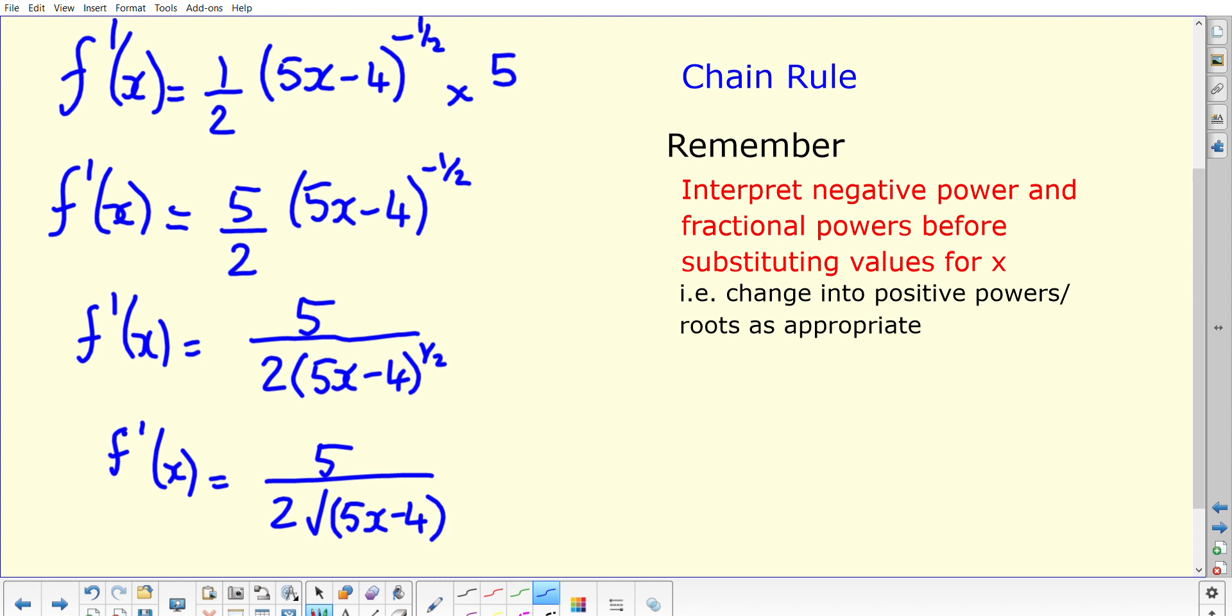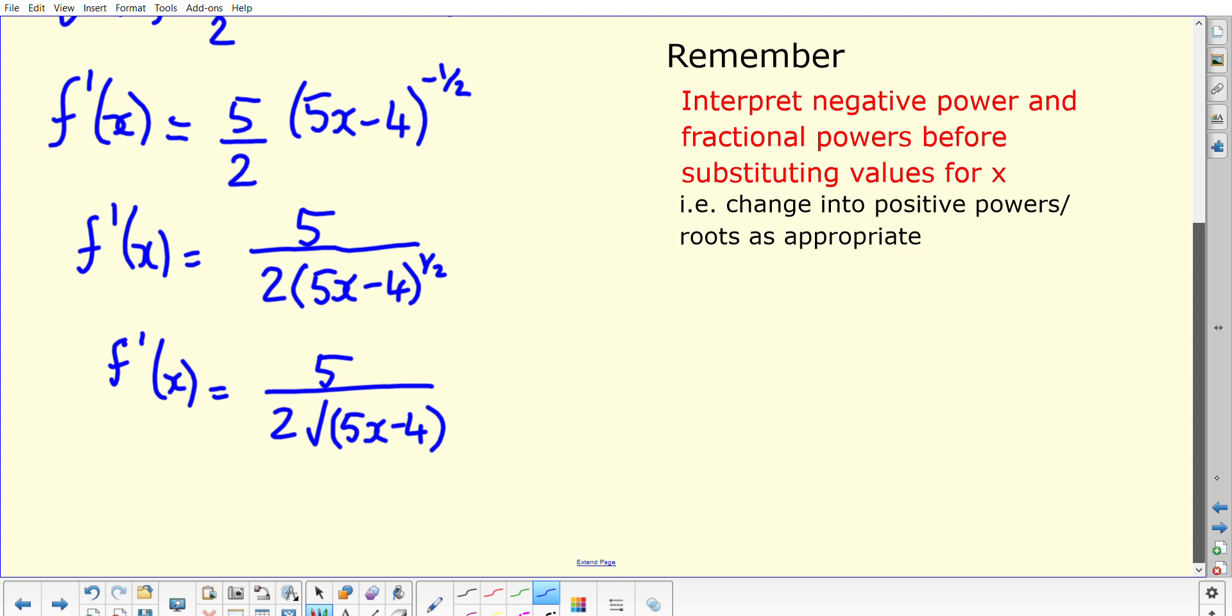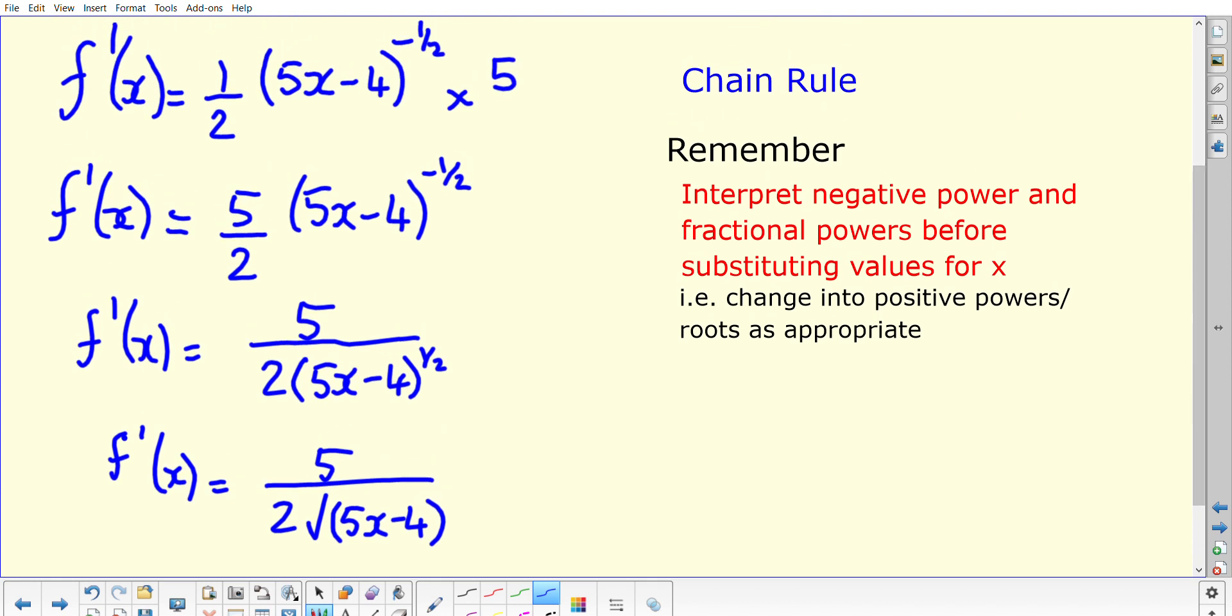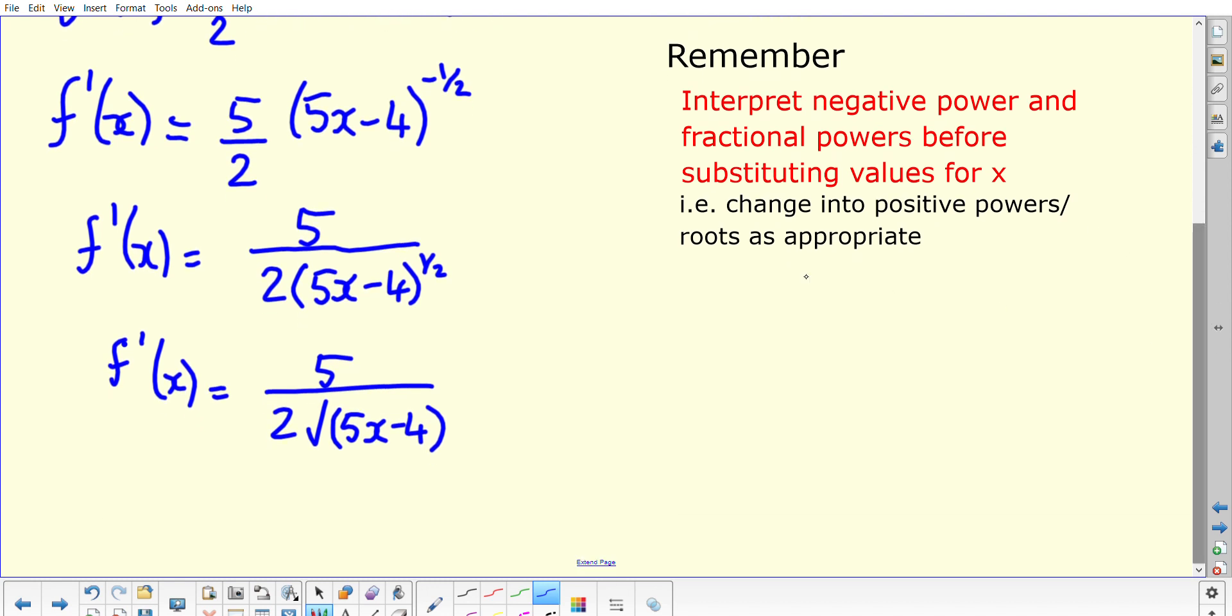The expectation would be that you then interpret the power of positive a half as being the square root of 5x minus 4. Once you've reached that point, you're then able to substitute. This is the key point here at the side - use the chain rule and remember to interpret negative powers and fractional powers before substituting the value. By interpret, I mean change into positive powers and interpret any roots that you've got there.